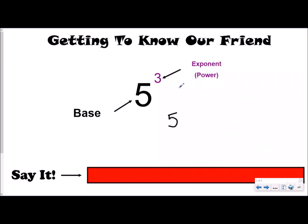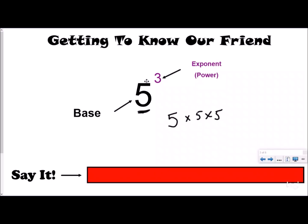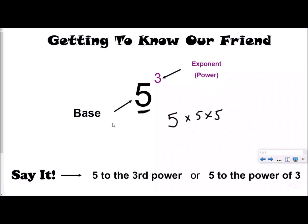The exponent tells us how many times we're going to multiply that same number by itself. In this case my exponent is three, so I'm going to do five times five times five — this number is telling me to multiply the base times itself three times. Some people get confused and think this means five times three — that's not the case. It's not repeated addition, it's repeated multiplication. So the exponent tells us how many times we need to multiply the base times itself. We would say this as five to the third power, or sometimes five to the power of three.